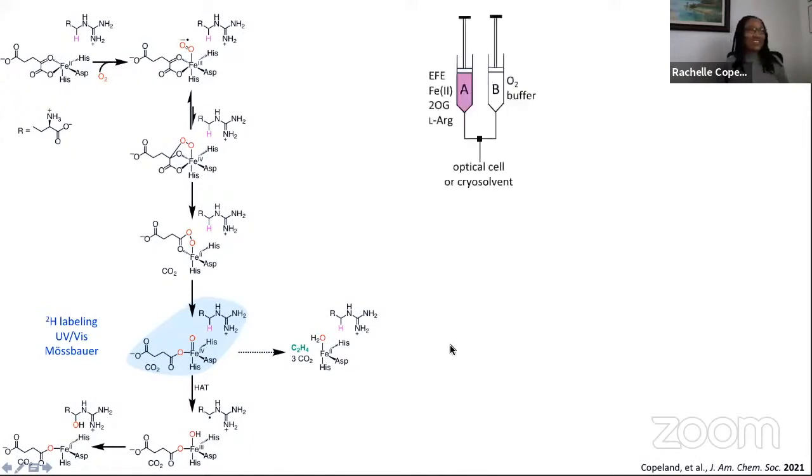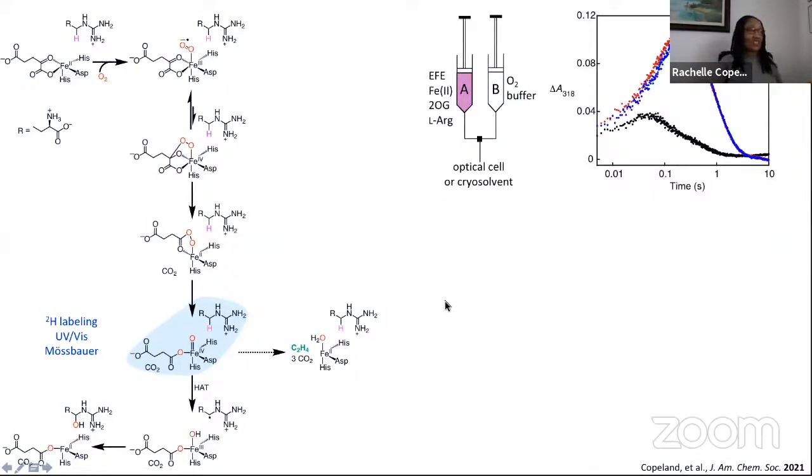I'll walk you through the results of our investigation into this question. We used stop flow and freeze quench methods in tandem with UV-Vis and Mössbauer spectroscopy. It's basically a rapid mixing technique wherein in one syringe you have the enzyme, iron, 2-OG, and arginine, and it's all anoxic. We mix that with oxygenated buffer and observe the changes in the ferryl.